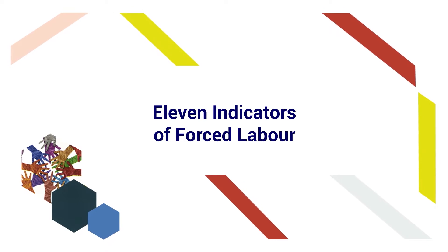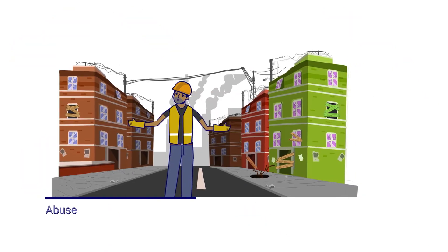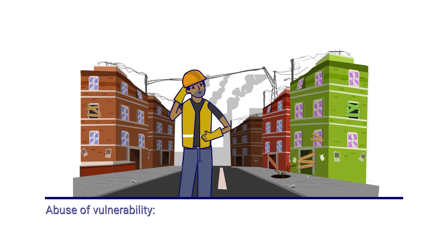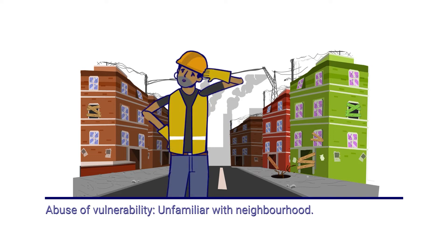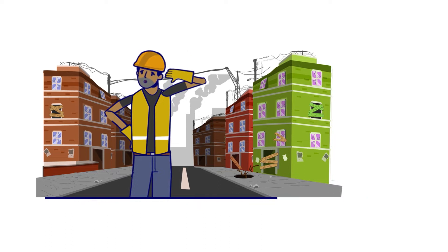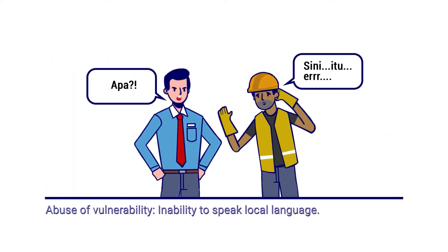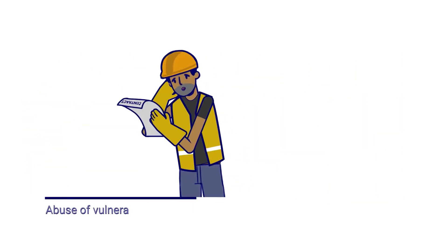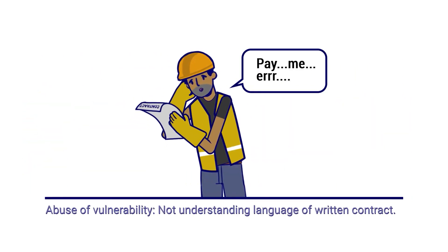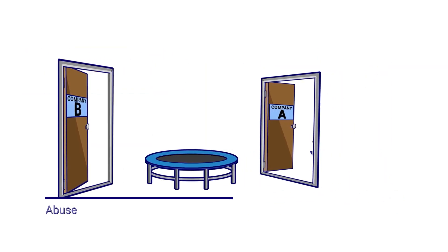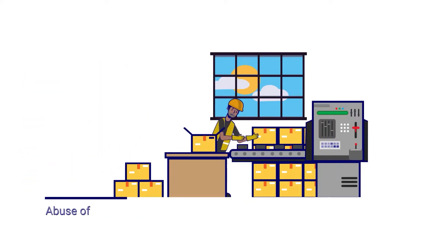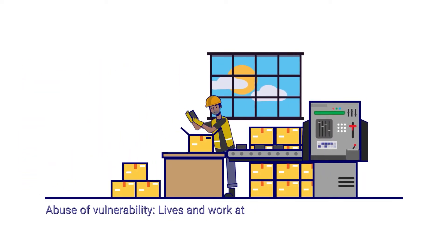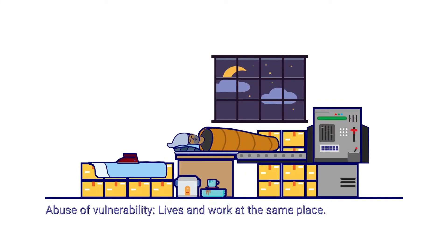What are the indicators of forced labor? Employers can eliminate risks of forced labor by ensuring there is no abuse of vulnerability. This includes a worker's unfamiliarity with the neighborhood, inability to speak the local language, not having a written contract in a language the worker understands, being frequently transferred from one workplace to another, or having to sleep at the workplace and living and working in the same place.